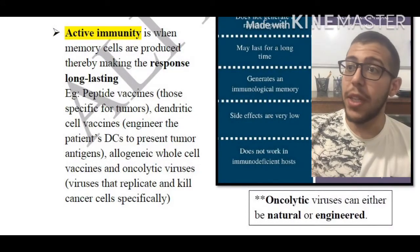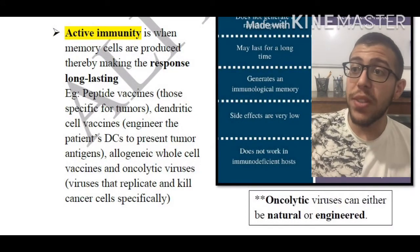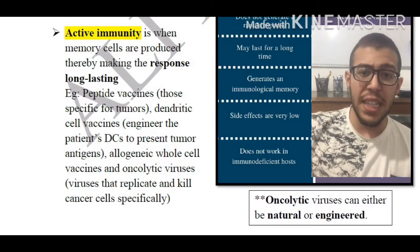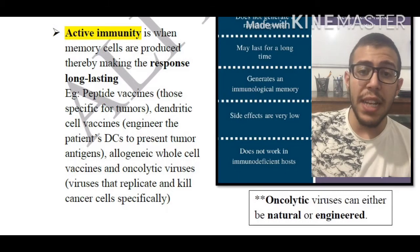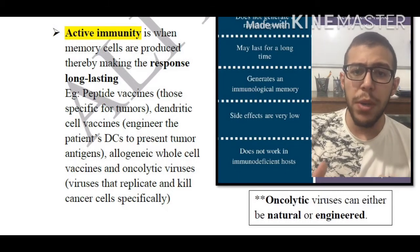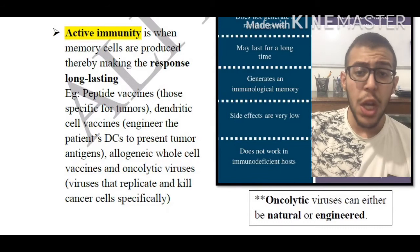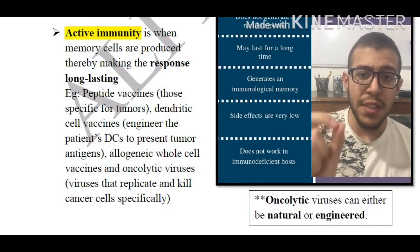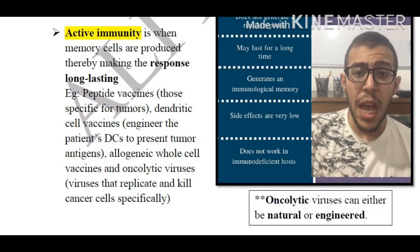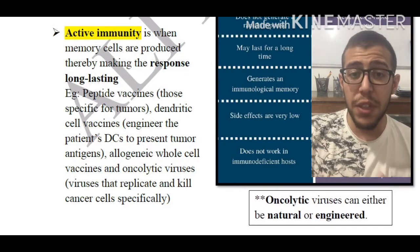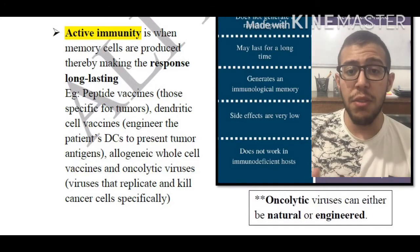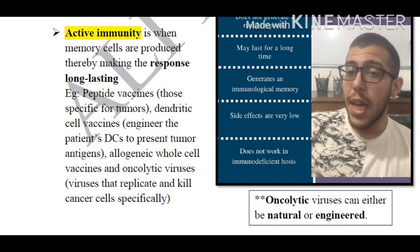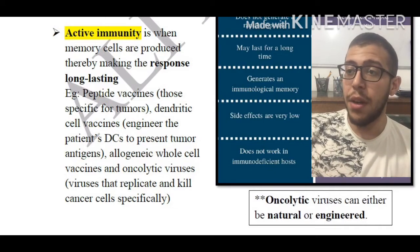Regarding active immunity, it is when memory cells are produced, thereby making the immune response long-lasting. It also induces a quicker response whenever we're exposed to the same antigen. These memory cells are not specific to just cancer — they are general and can apply to antigens present on the surface of bacteria, viruses, and other factors.